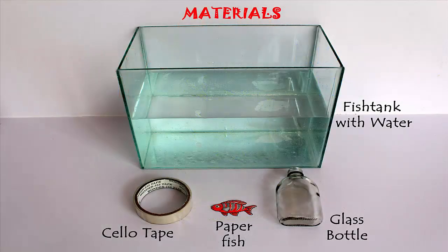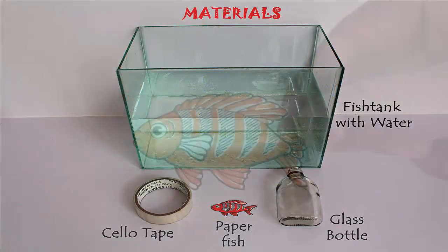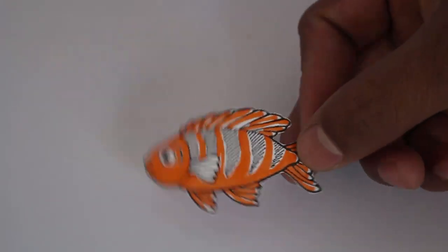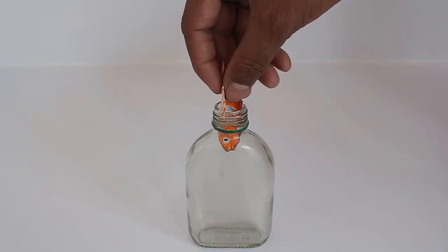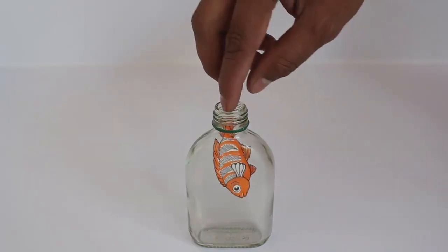You will need a glass bottle, a fish tank full of water, and a paper fish. Cut the fish from paper, color it, fold the fish, and place it in an empty glass bottle.